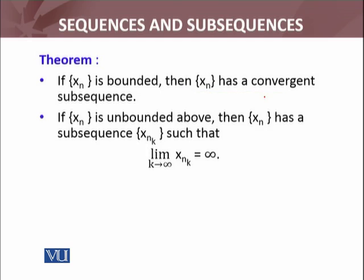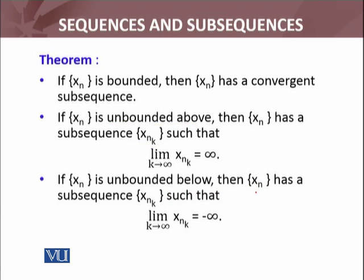If XN is unbounded above, then XN has a subsequence, which I am denoting by X_Nk, such that the limit as k approaches infinity of X_Nk equals infinity. It means we must be able to find a subsequence that diverges to infinity if XN is unbounded above. Similarly, if XN is unbounded below, then the sequence must have a subsequence that diverges to minus infinity. This is the full statement of the theorem I am going to prove.